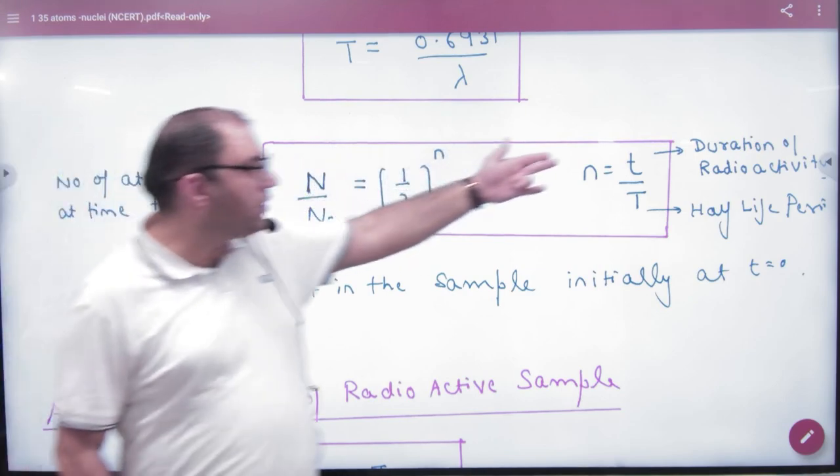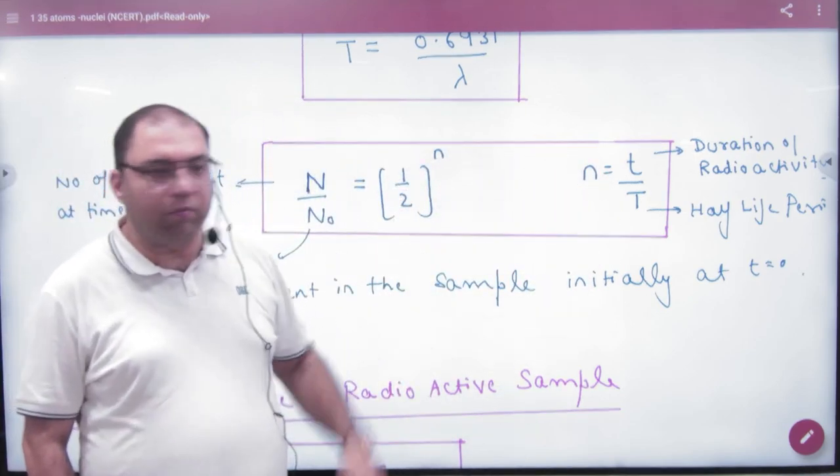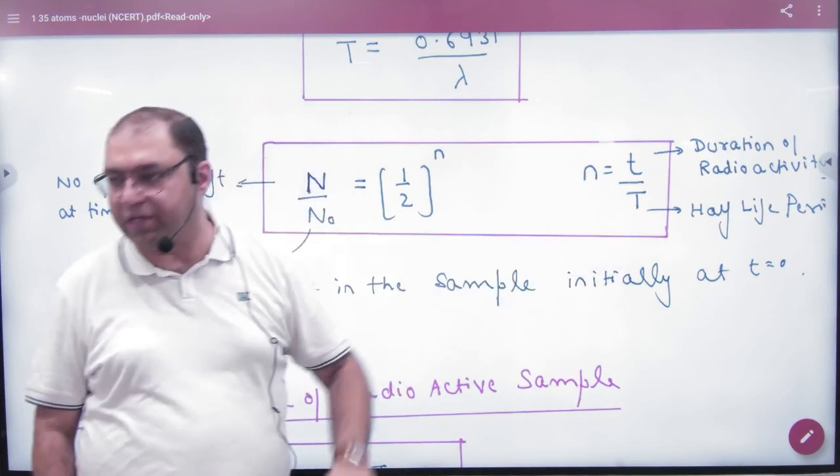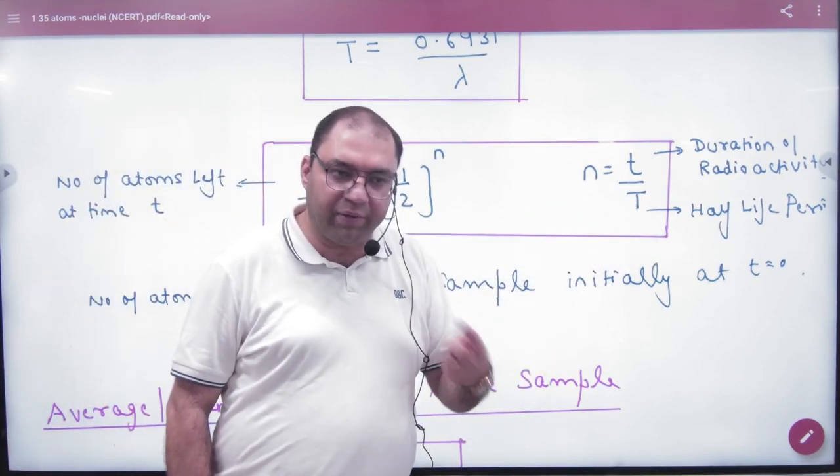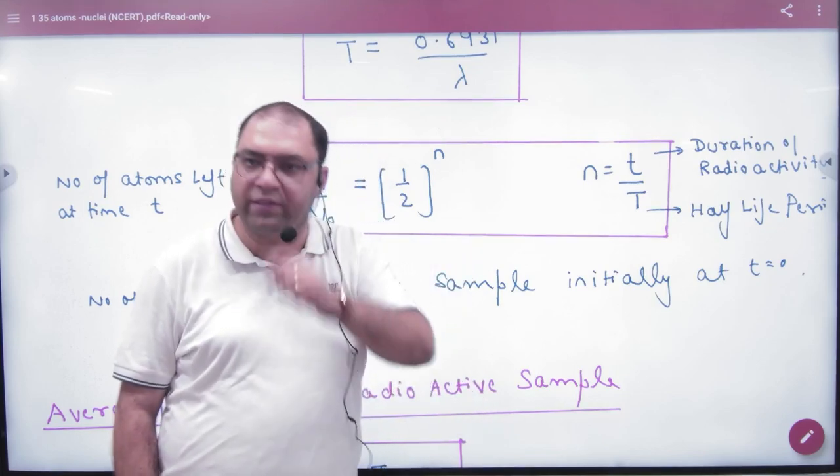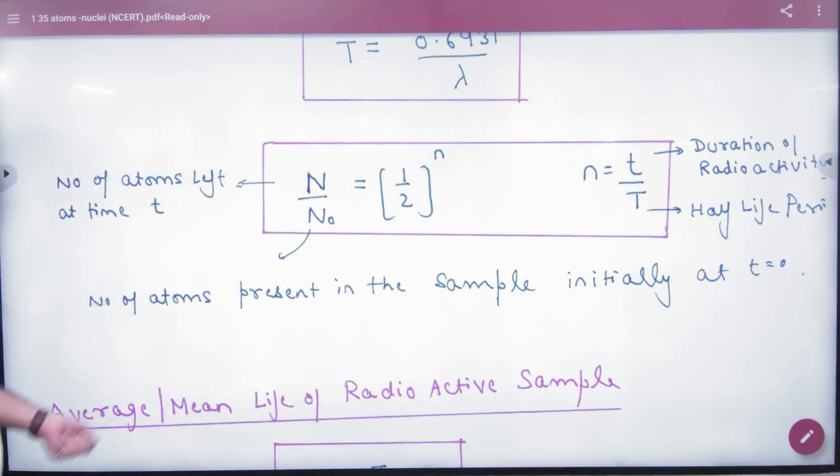Where is the formula for small n? It's small t by capital T. Small t means how much time the radioactivity went on - say, 10 days. Capital T means half-life period. So the time elapsed divided by the half-life period gives you n, and we will use this in the formula.